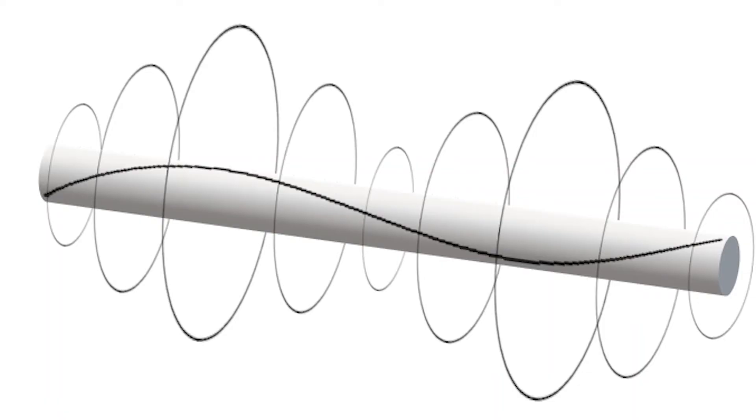With electricity there are two big problems. Anytime you run an electrical current through a wire, a magnetic field is created around that wire. The reverse is also true — anytime a magnetic field passes by a wire, it will induce an electrical current onto that wire.